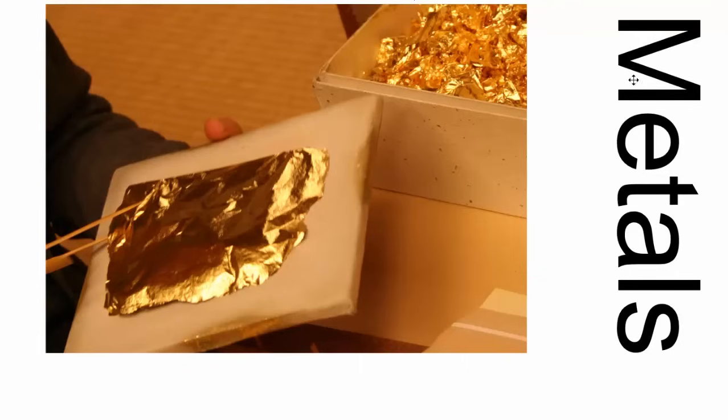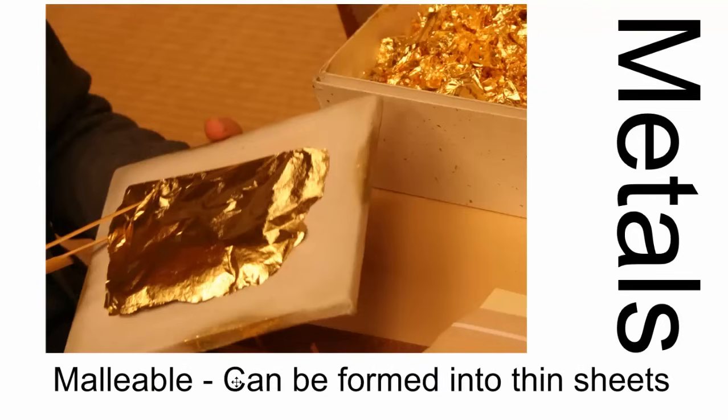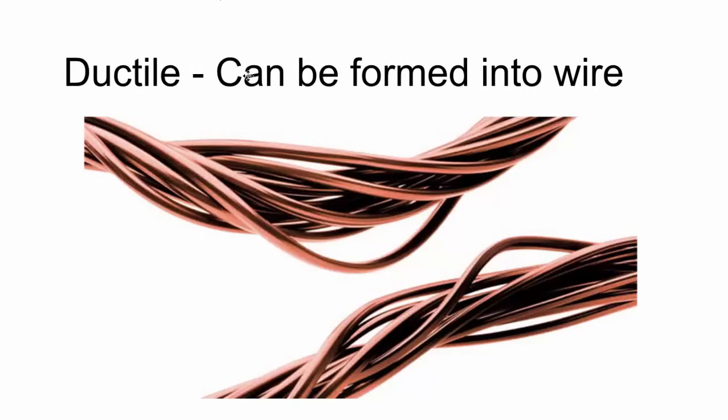Let's begin by discussing the properties of metals. This is a piece of gold that has been pressed into a thin foil. That's because many metals are malleable. Malleable means that they can be formed into thin sheets, like this gold foil. We can also discuss being able to turn metals into wire. This copper is said to be ductile. Ductile means that the metal can be formed into wire.